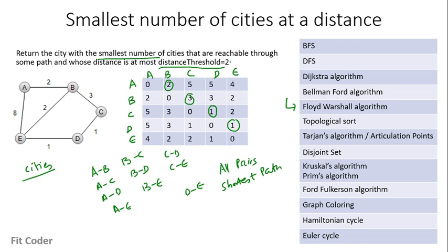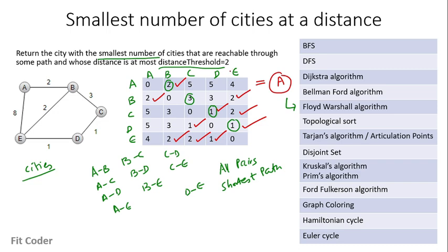With the distance threshold of 2: for vertex A, only B is at distance 2. For vertex B, A and E are at distance 2. For vertex C, D and E are at distance 2. For vertex D, C and E are at distance less than 2. For vertex E, B, C, and D are at distance 2. The city with the smallest number of reachable cities is vertex A, which has only one city within distance 2. In this manner Floyd-Warshall can be used to solve this shortest path problem.